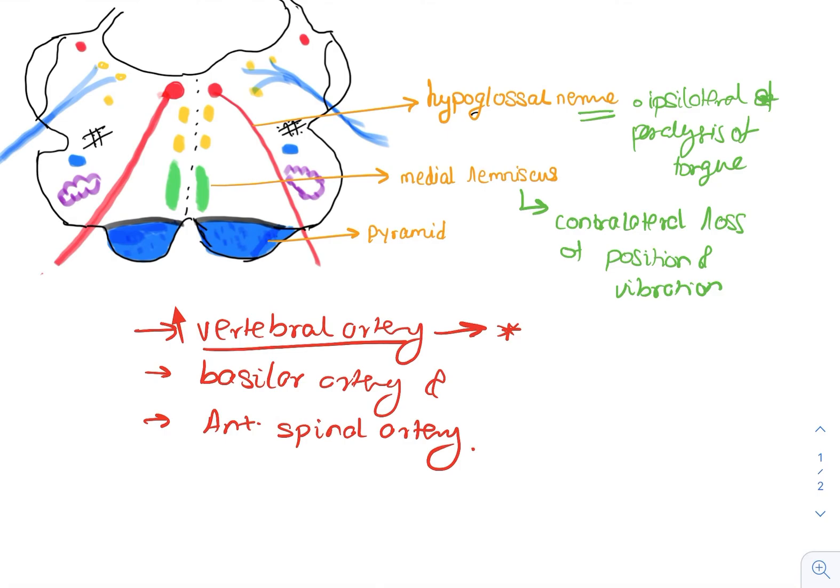The pyramids mostly consist of the corticospinal tract; therefore, the motor system will be affected due to loss of the corticospinal tract. We get contralateral hemiparalysis of the arm and leg. The corticospinal pathway gives motor supply to the arm and leg. Due to decussation of the fibers at the pyramid, we get contralateral hemiparalysis.